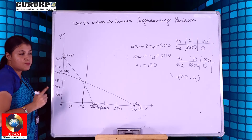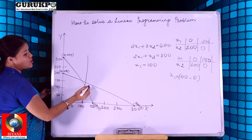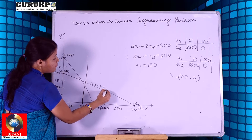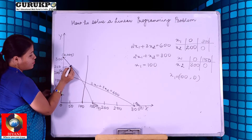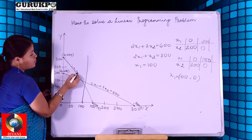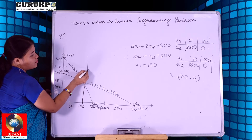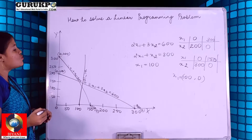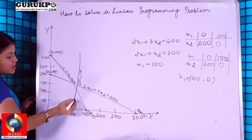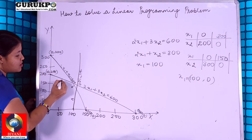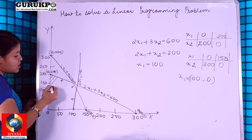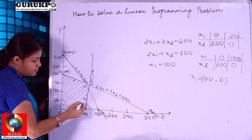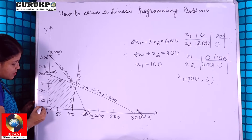After marking all points and drawing the lines, we write the equations on the graph. The next step is to identify the feasible region — the common area that satisfies all three equations. We shade this area; this is our feasible region.